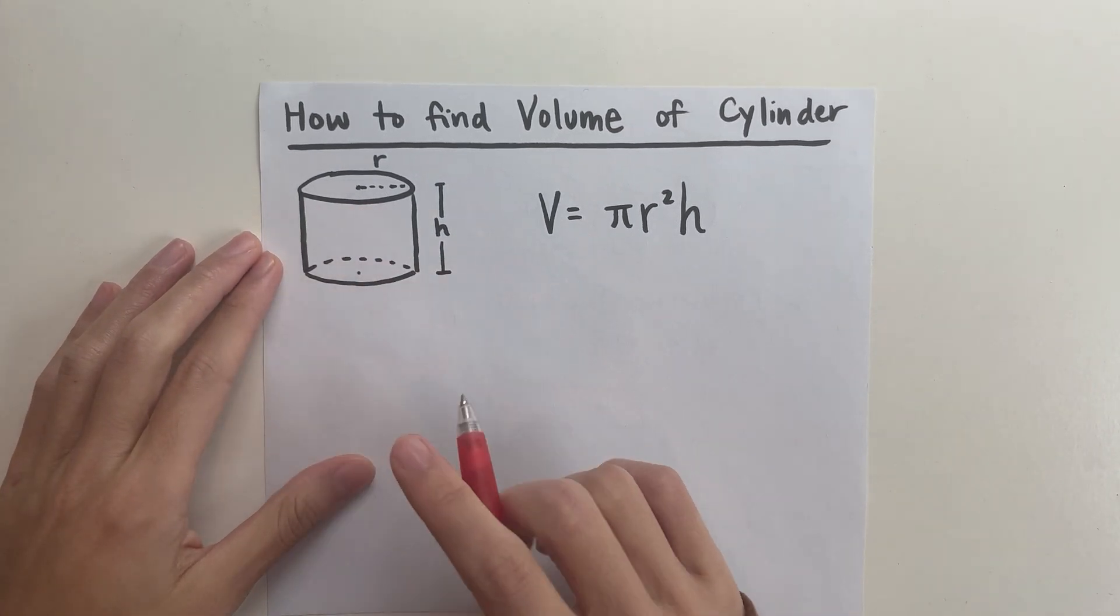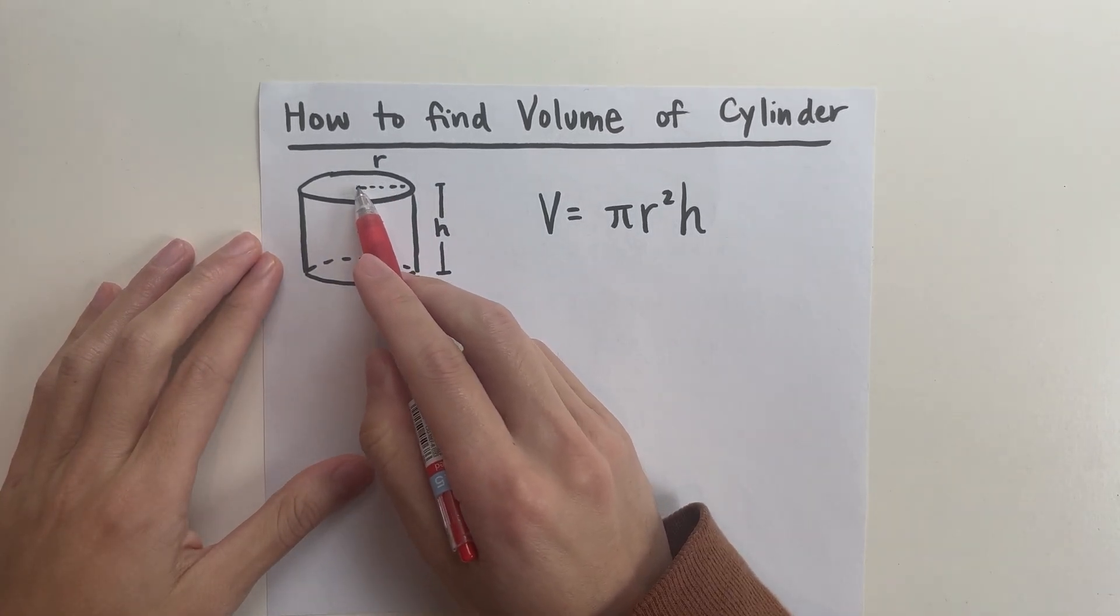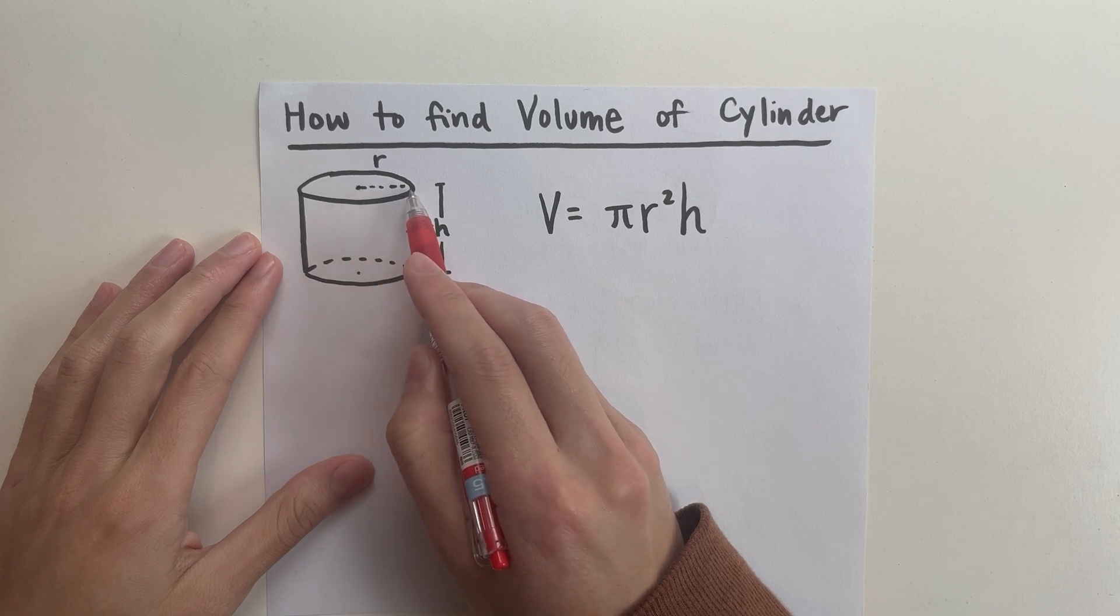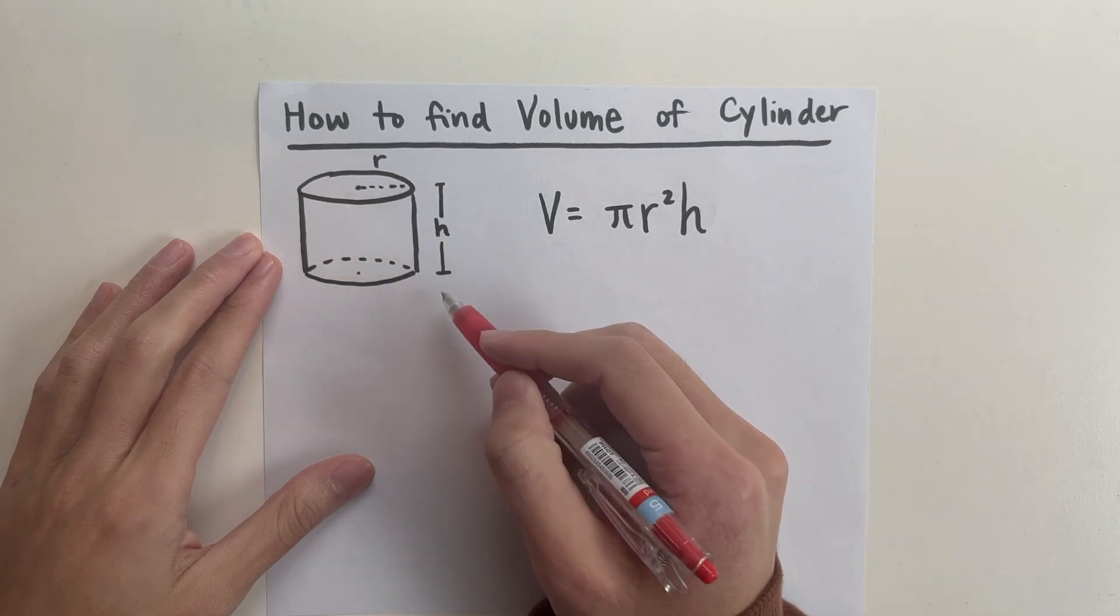We have a cylinder right over here with a denoted radius from the center of the circle to any other point in the circle, and then the height of the overall cylinder itself.